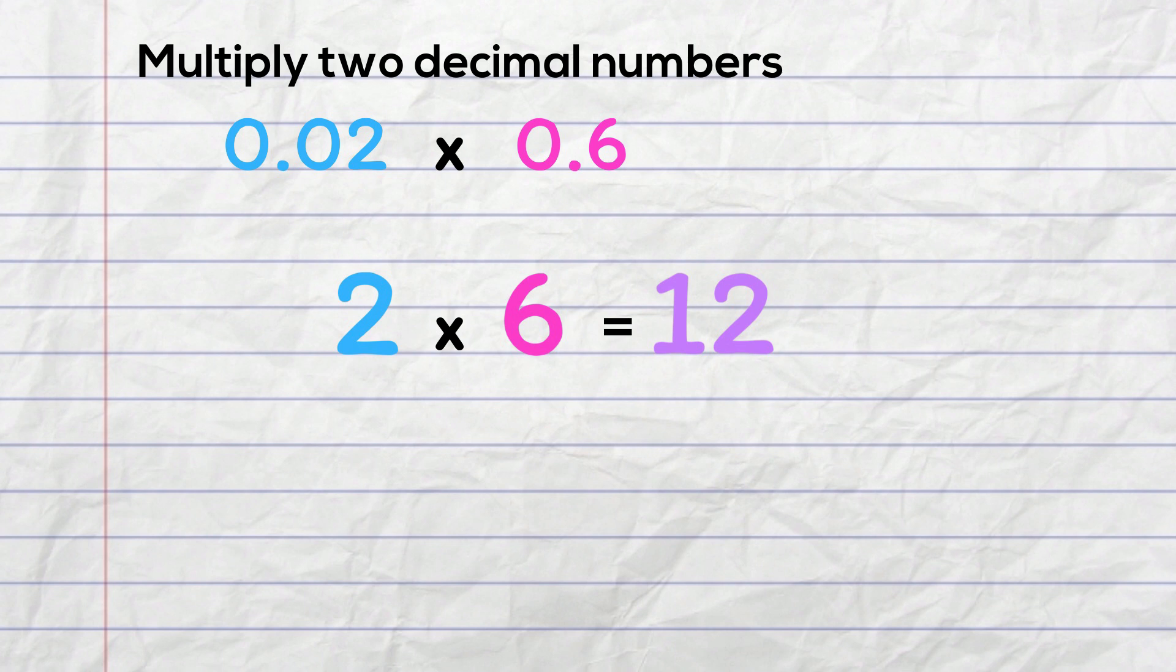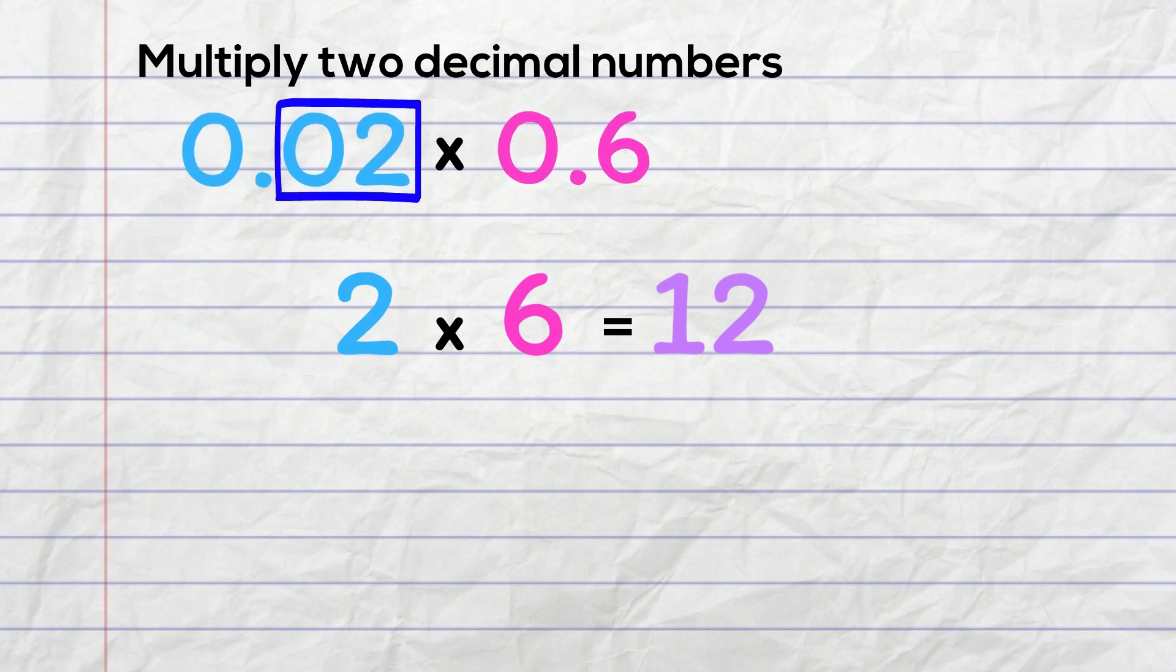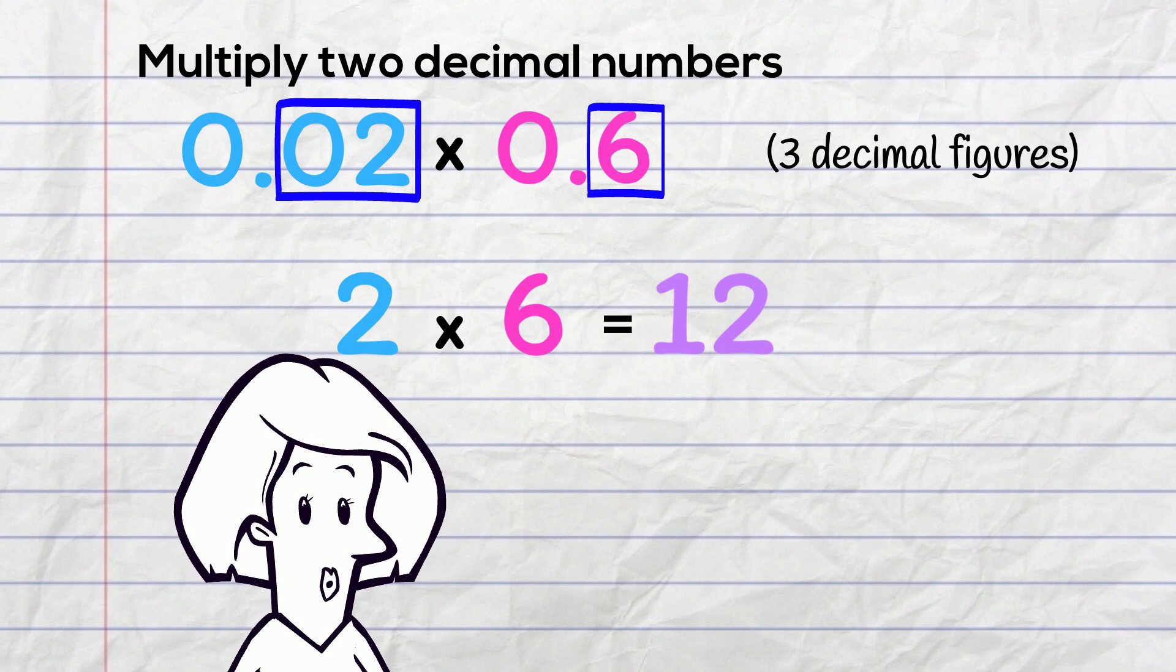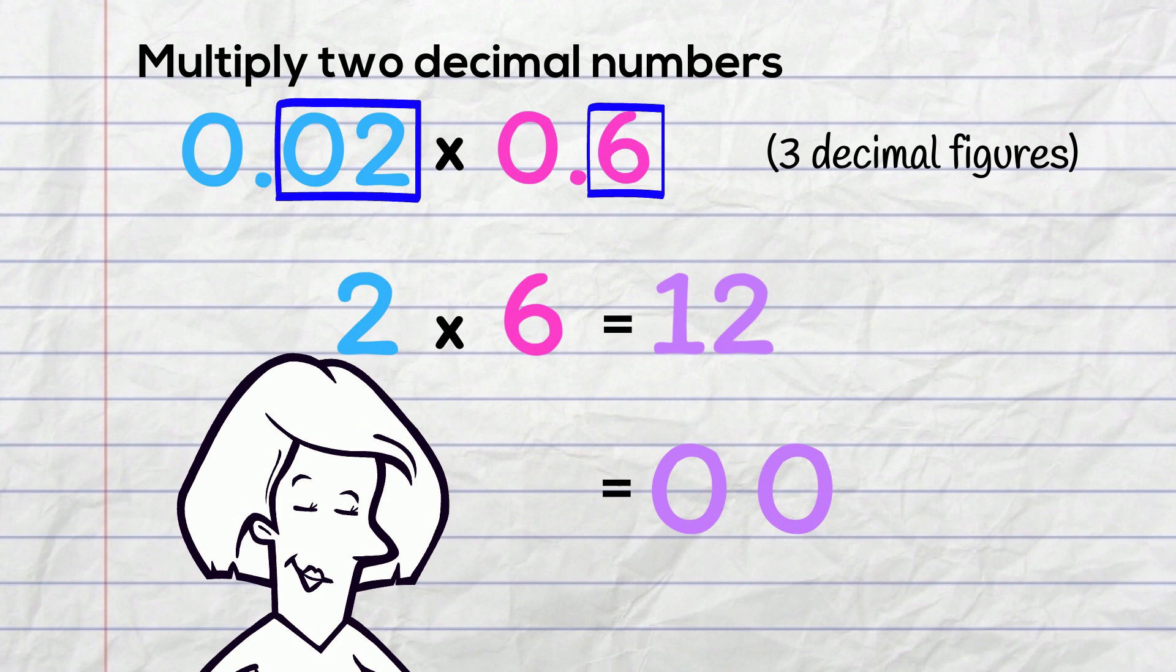And now we put those decimal places back into the answer. In the original numbers we've got 2 decimal figures here and 1 here, and we need 3 decimal figures in the answer! I only have 2 figures right now! Not a problem! I write a couple of zeros in front of my 12.